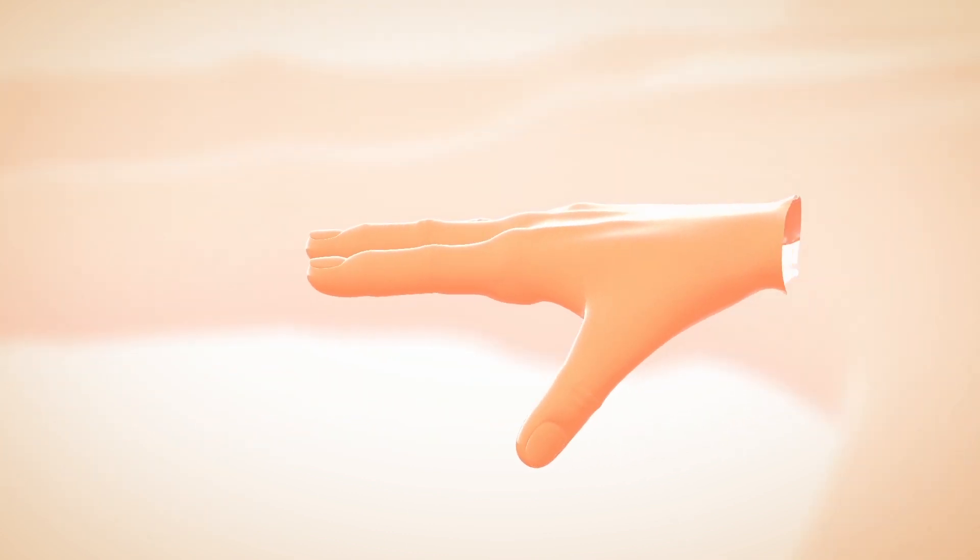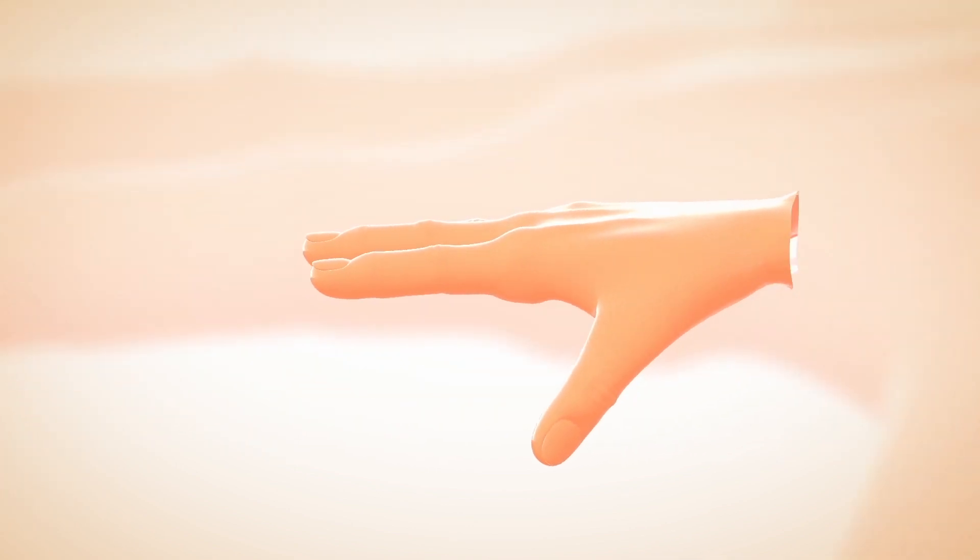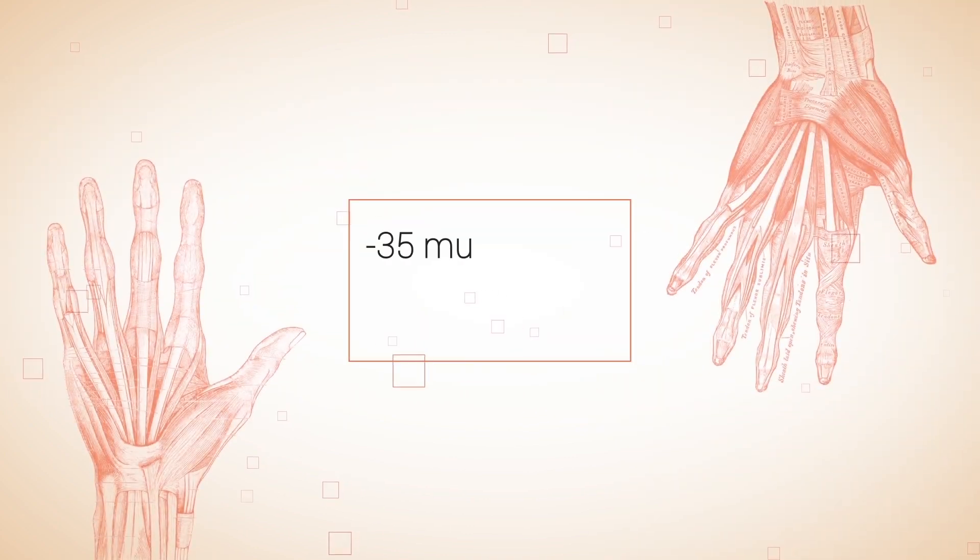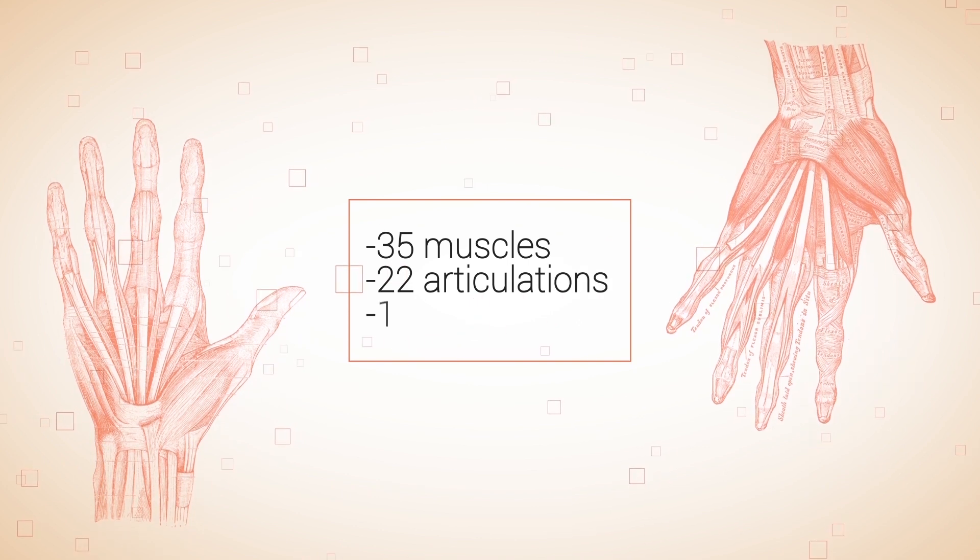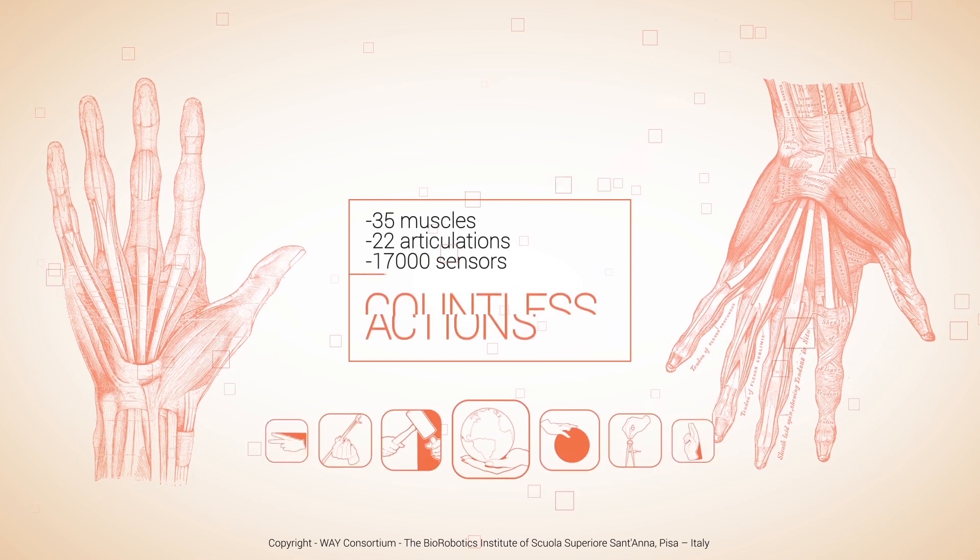The human hand is a complex integrated system with motor and sensory components that provides individuals with high functionality and elegant behavior in direct connection with the brain. With 35 muscles, 22 articulations, and more than 17,000 sensors in the skin, the hand is capable of performing countless actions.